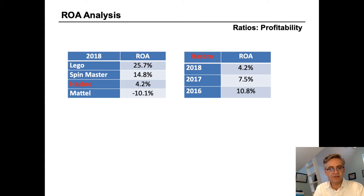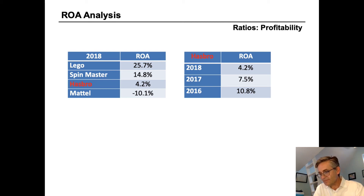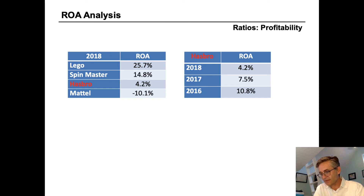There are two ways to increase the ratio: one is to increase the numerator, and two is to decrease the denominator. So this is a ratio that's open to manipulation by taking assets off the balance sheet — through operating leases, sale leasebacks, or related company asset sales.